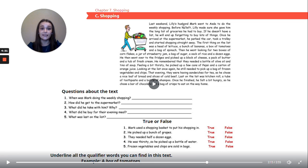Last weekend, Lily's husband Mark went to Asda to do the weekly shopping. Before he left, Lily made sure she gave him the long list of groceries he had to buy. If he doesn't have a list, he will end up forgetting to buy lots of things. Once he arrived at the supermarket, he parked the car, took a trolley, and started shopping straight away.